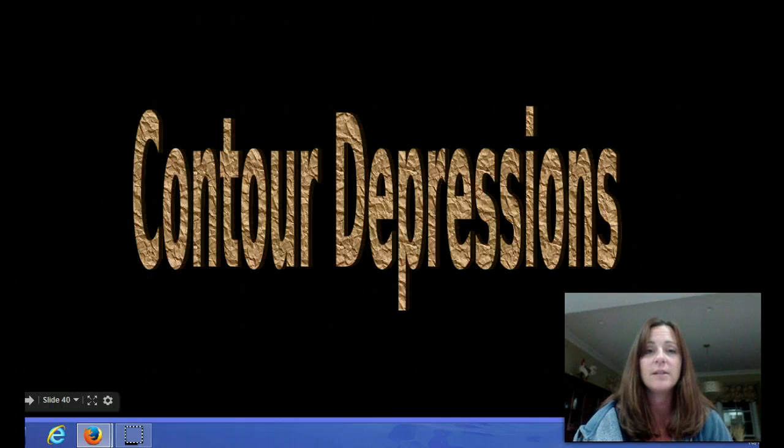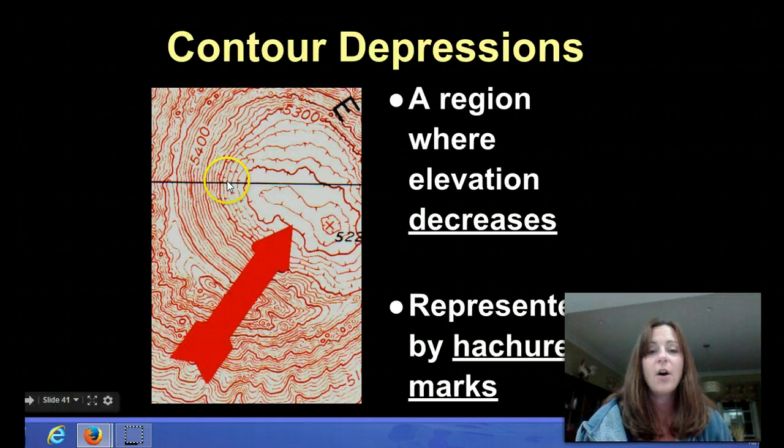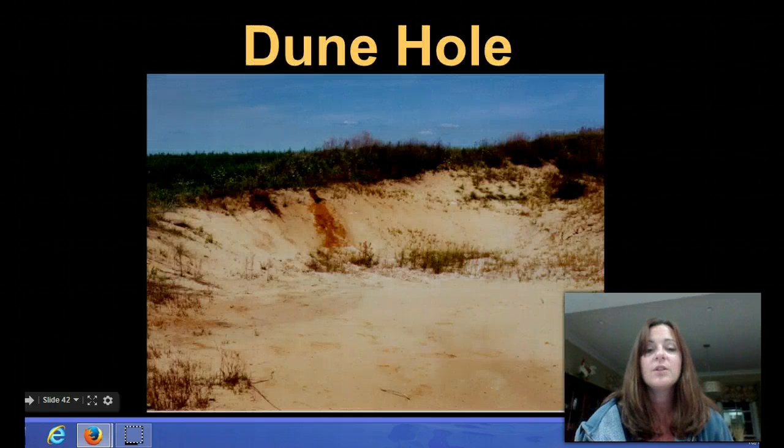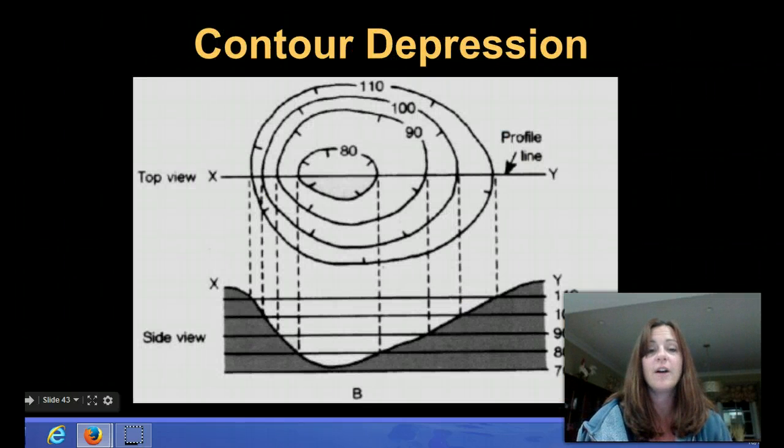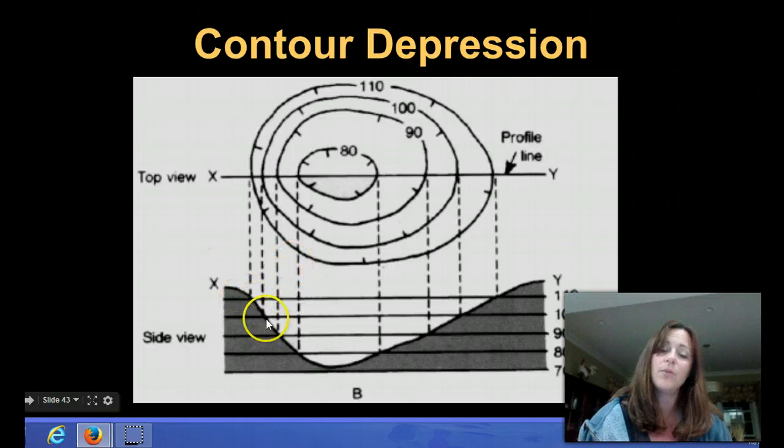Okay, contour depressions. Contour depressions are hills or divots in the landscape, and they're indicated by these little lines on the contour line. These are called hatcher marks, and it shows that you're going downward into that hole. So here's a picture of what a depression looks like. It's a hole. And here is a picture of the contour lines with the hatcher marks that we see on a contour map, and it's placed on the side view or the profile. So you can see it goes downward and dips down into a hole.